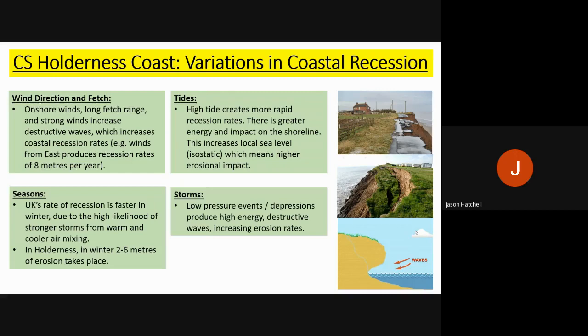Storms — low pressure events like depressions — produce high-energy destructive waves that increase erosion rates. As you can see in the image on the bottom right, a wave-cut platform has formed with a wave-cut notch eroded out of the cliff base. This happens a lot along the east coast, causing the cliff above to become unstable and fall into the sea.